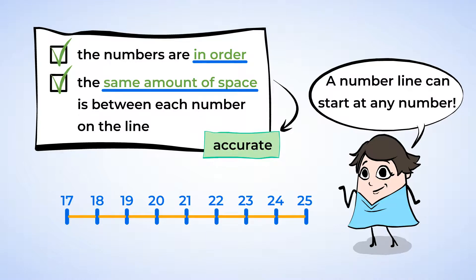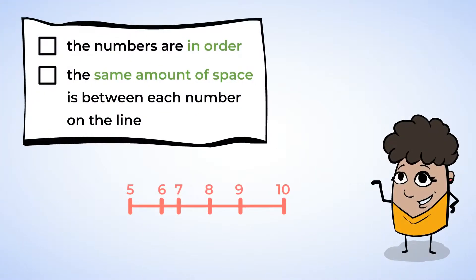And last but not least, here is the pink number line. This one also doesn't start at 0, but we already know that's okay. And the numbers count by 1s from 5 to 10, so that rule is followed. Oh, but these marks are definitely not evenly spaced. So this number line is not accurate, because the space between the marks all have to be the same.